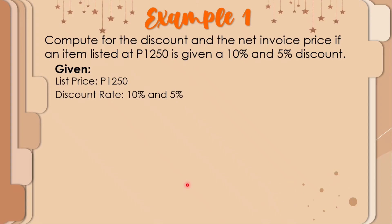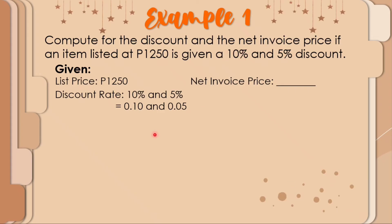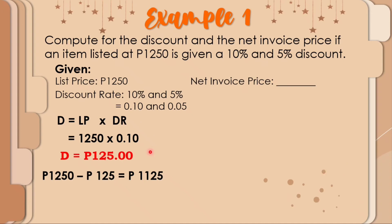Problem: compute the discount and net invoice price for an item listed at 1,250 pesos given a 10 percent and 5 percent discount. Convert to decimals: 10 percent = 0.10, 5 percent = 0.05. First, compute the discount for 10 percent: 1,250 times 0.10 = 125 pesos.